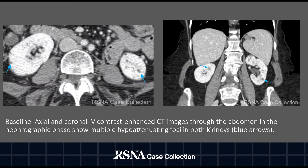The left image is an axial contrast-enhanced CT scan through the abdomen in the nephrographic phase and showcases multiple hypoattenuating foci in both kidneys, denoted by the blue arrows. The same finding is also found in the coronal CT image on the right.